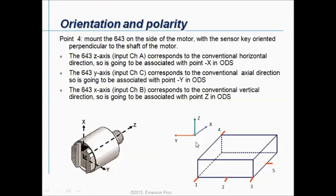If you are in point 4 you have to rotate the sensor and you will change the polarity. Your input A corresponds to the conventional horizontal direction, so it is going to be associated with point minus X in ODS. Remember from before the X was in this direction. Now your X is in this direction, so it will become minus X. It will become also minus Y but still normal Z. When I install the sensor in position 4 for X and for Y I have to make the polarity negative.